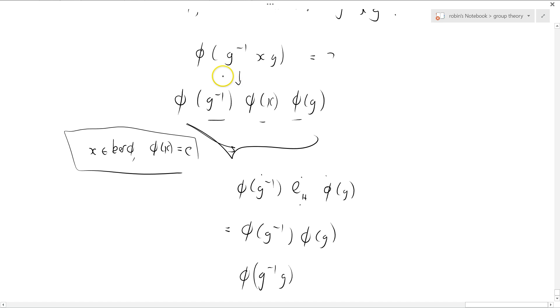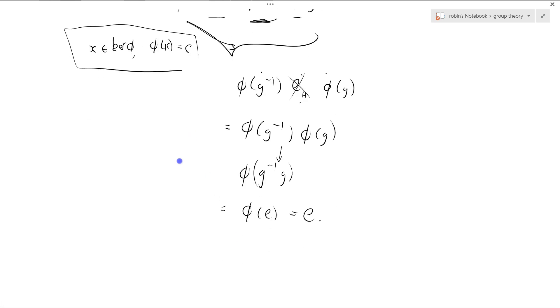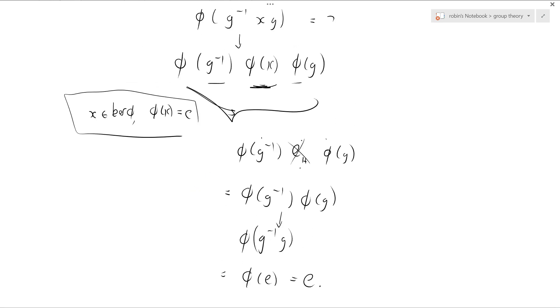Once here, to go from there to there, and once to go from there to there. So we're sort of unwrapping this product in terms of phi's, doing some stuff to it, which is recognizing that X is in the kernel, and therefore phi of X equals the identity. Cancelling that out, that one just disappears. And then at this step here, we use the homomorphism property again.